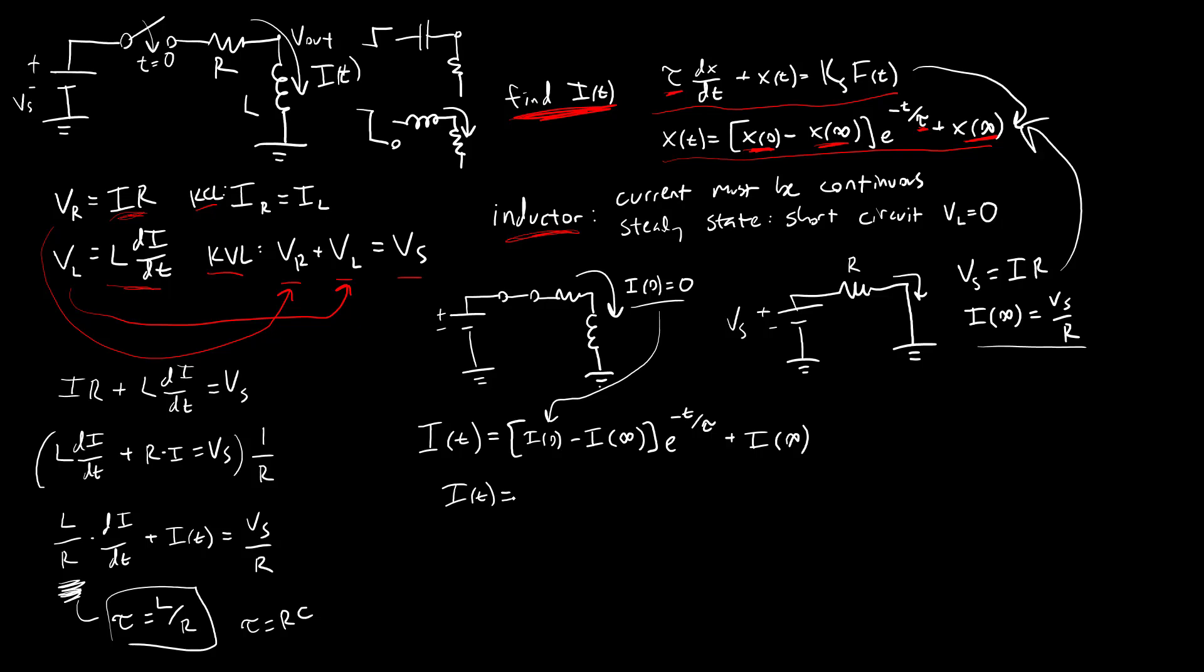Now we're going to plug our values in. I of T equals zero minus Vs over R, e to the negative T over tau plus Vs over R. I'm going to try and write out a bunch of the algebra steps because I am bad at doing algebra in my head at my old age. So that is going to be equal to negative Vs over R e to the negative T over tau plus Vs over R.